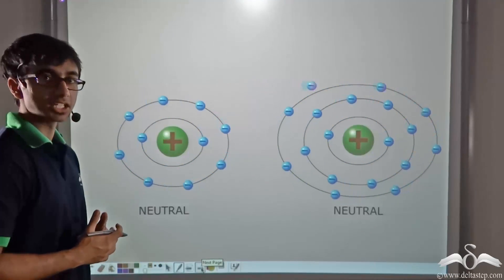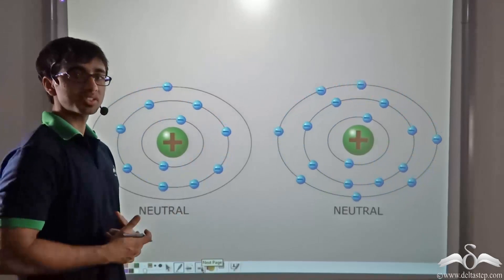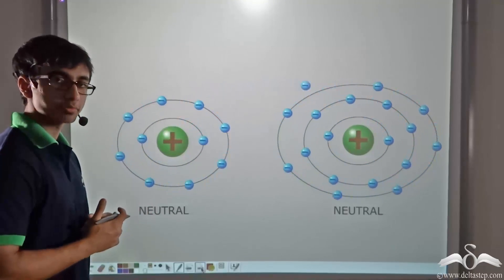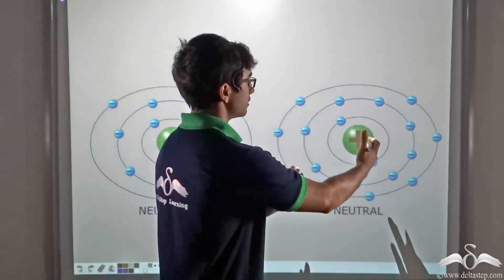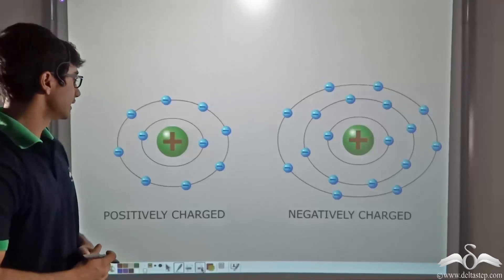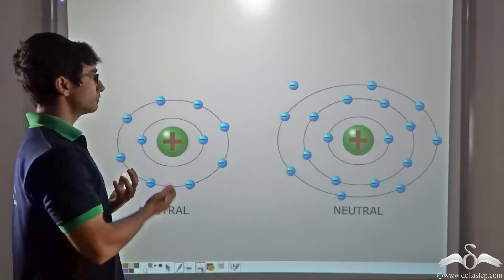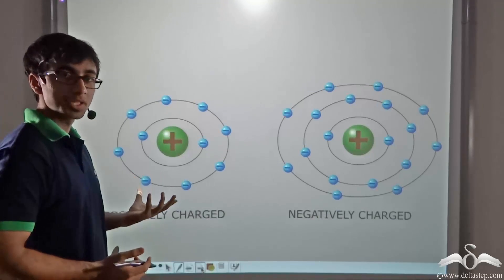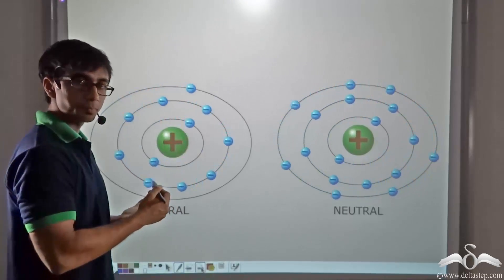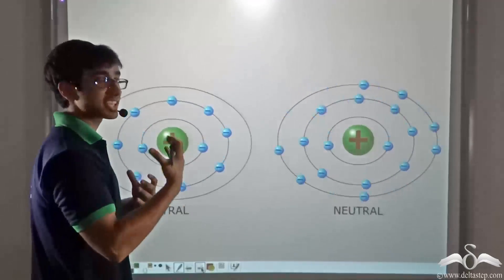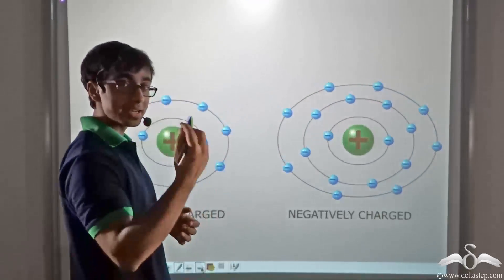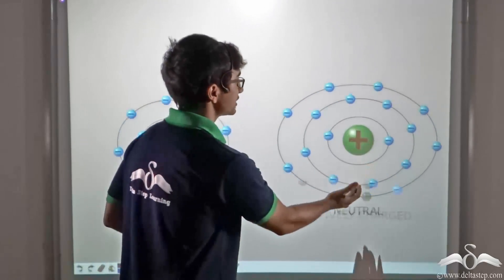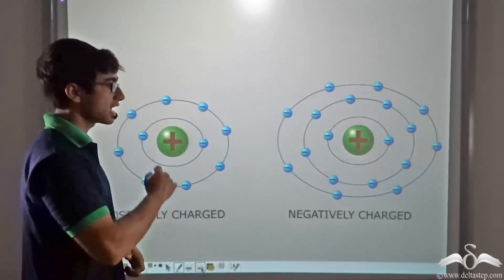How can we explain this in terms of atoms? Consider two neutral atoms in the beginning — each has an equal number of protons and electrons. Now one electron gets transferred from the first atom to the second atom. As a result, the first atom develops a deficiency of electrons and becomes positively charged, while the second atom gains an extra electron and becomes negatively charged after the transfer.